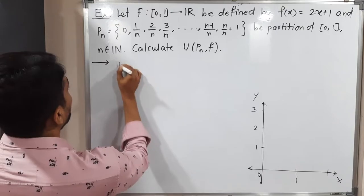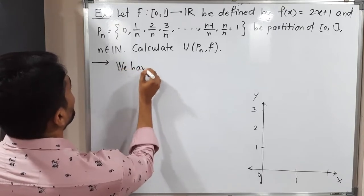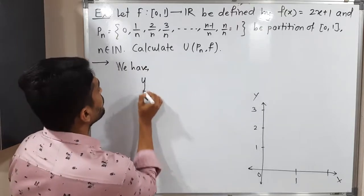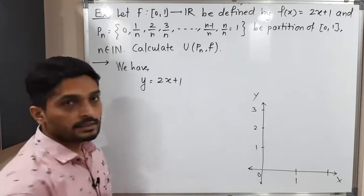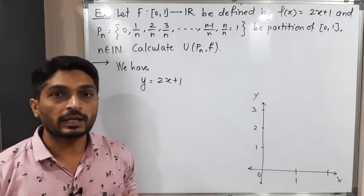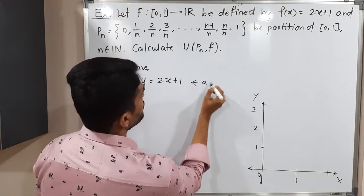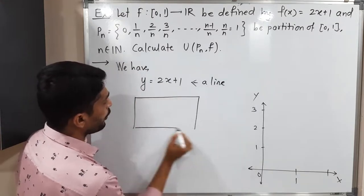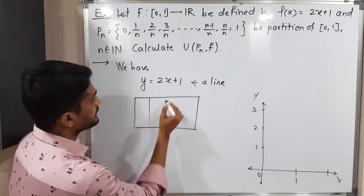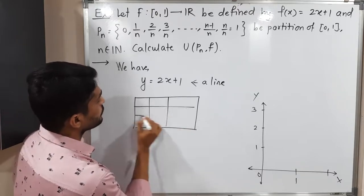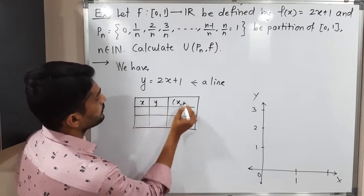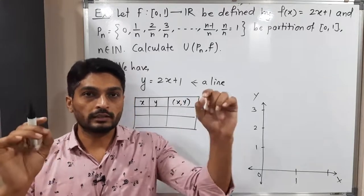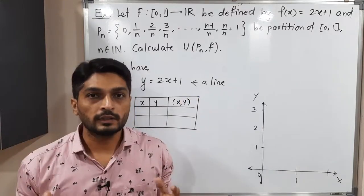To draw the graph, we replace f(x) by y, so we have y = 2x + 1. The power of y is 1 and the power of x is also 1, which means it represents a straight line. To find the line, we need any two points on it. I am drawing a table to find those points. By joining them, we will have the given line.